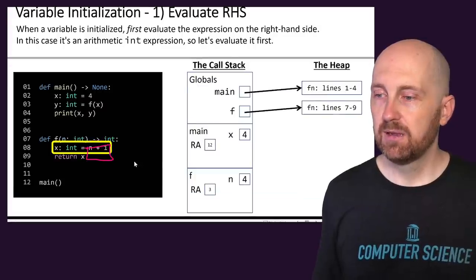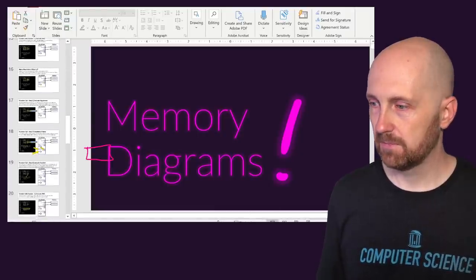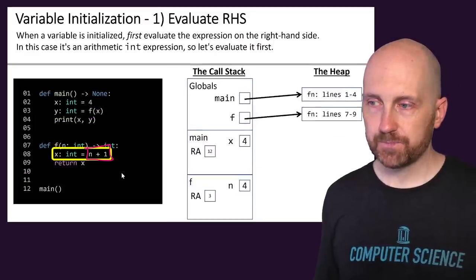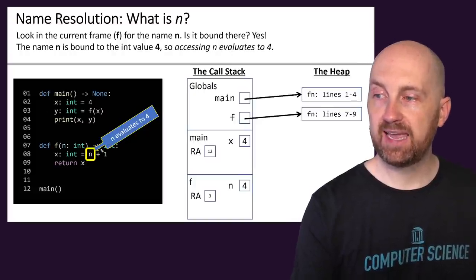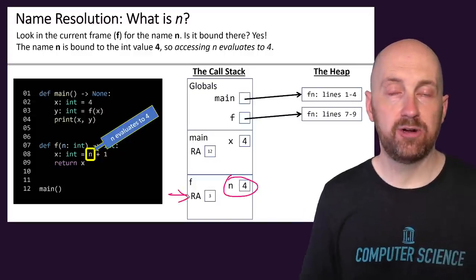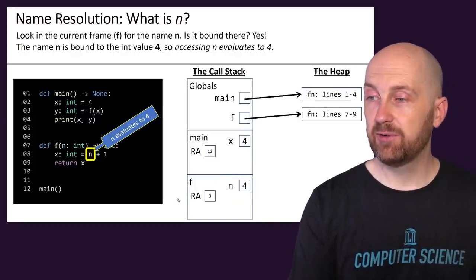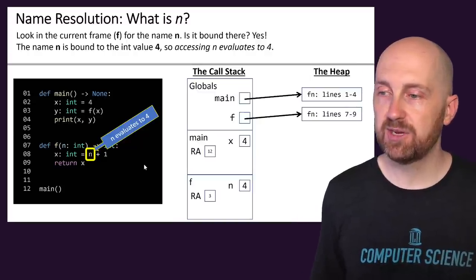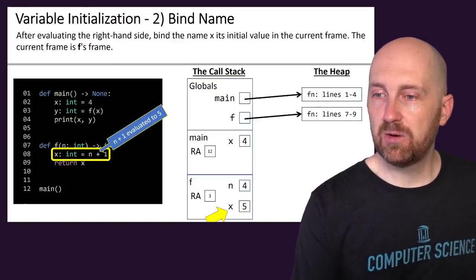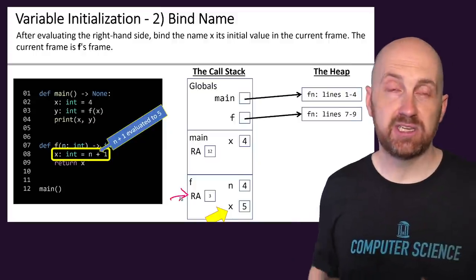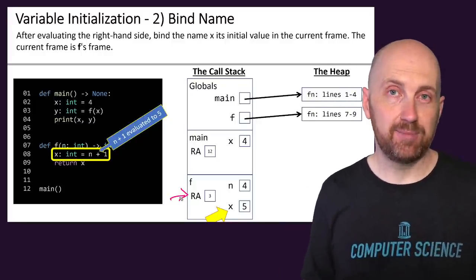We reach another initialization statement. We need to evaluate the right-hand side first: we've got n + 1. n is going to evaluate to 4 — we look in our current frame on the stack, which is the f frame, and we see that n's value is 4. So four plus one is going to be five, and then we're going to initialize x to be five. Notice that when you declare and initialize a variable inside a function, that variable is established in the frame you're currently working in.